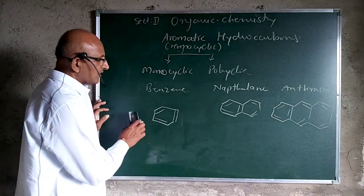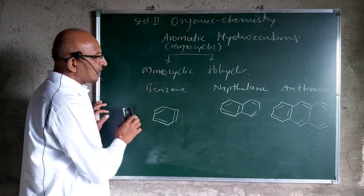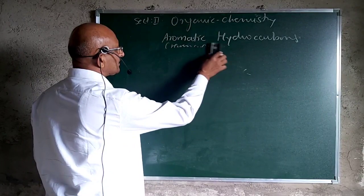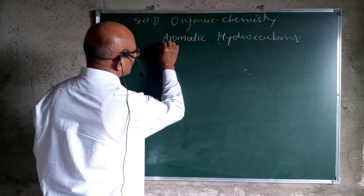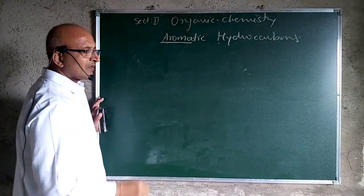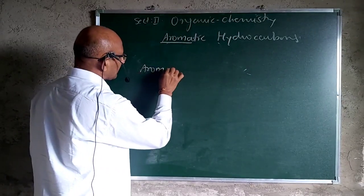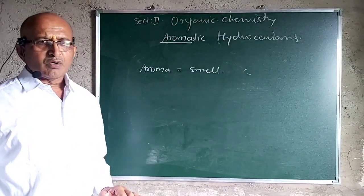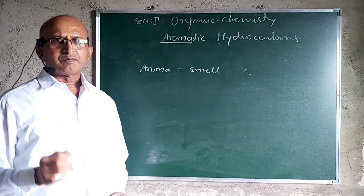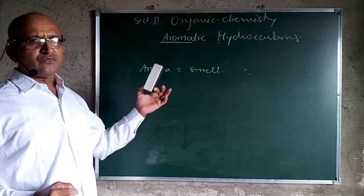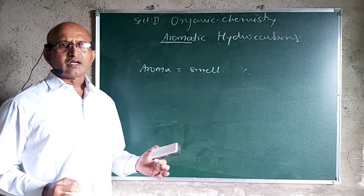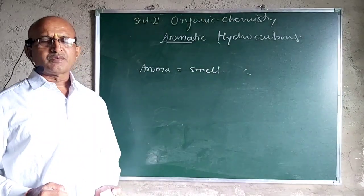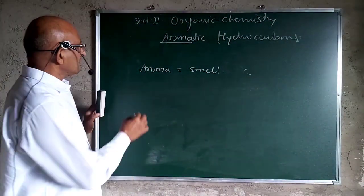Now, how did the term aromatic come into existence? The term aromatic contains the word aroma, and aroma means smell. So all these aromatic compounds have a peculiar smell. On the basis of this aroma, compounds were first considered to be aromatic. But this was overruled by some objections which were further discussed.